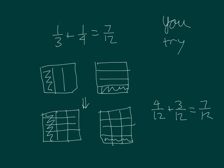So we made an equivalent fraction for one third equaling four twelfths, equivalent fraction for one fourth equaling three twelfths, and added those together to get seven twelfths.